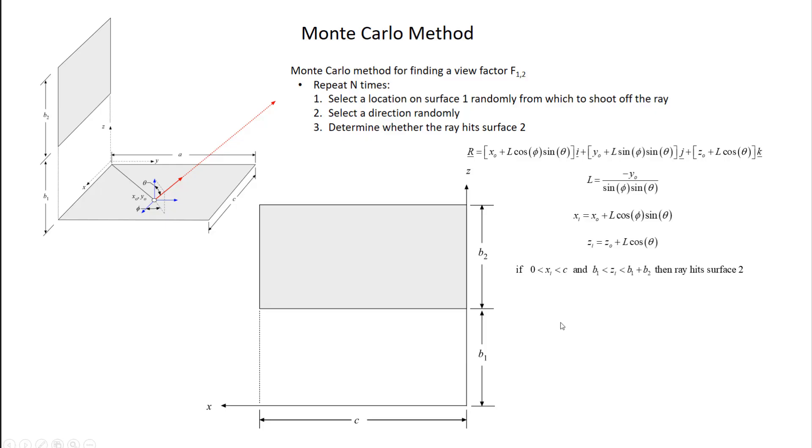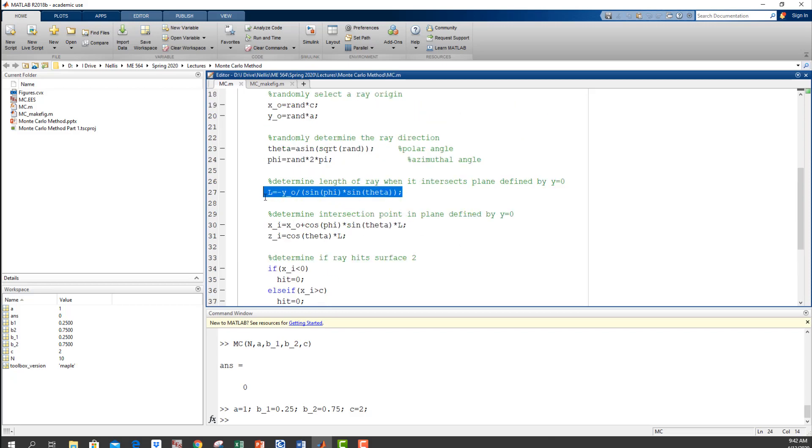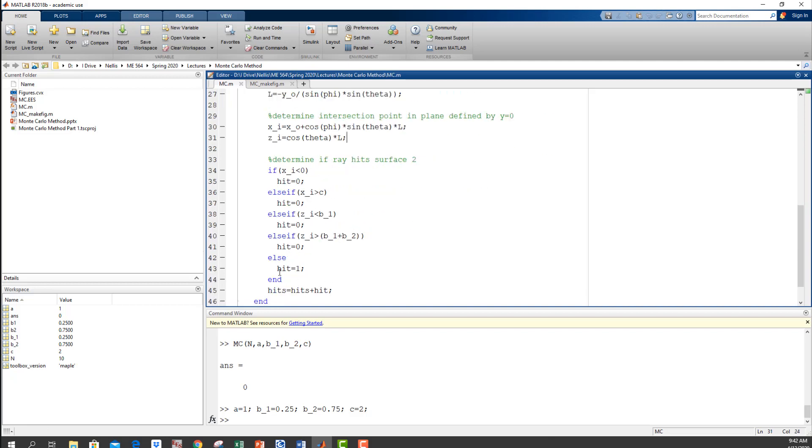And so, let's go back and look at the MATLAB code. So here, here's my length at which the ray will intersect the y equals 0 plane. And then here's my x-intersection point and my z-intersection point. And then this is just a little bit of logic to decide whether or not my hit counter should be incremented or not. So if x is less than 0, no. If x is greater than C, no, and so on and so forth. If none of these things are true, then yes. Then absolutely I've hit and so then I increment my hit counter.